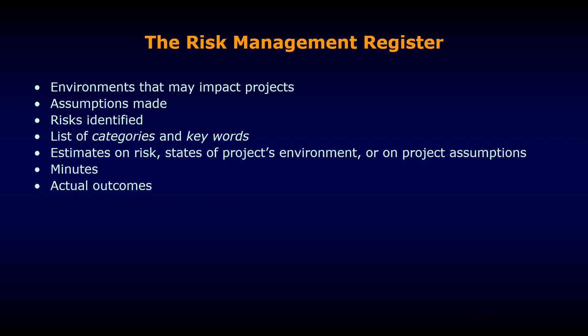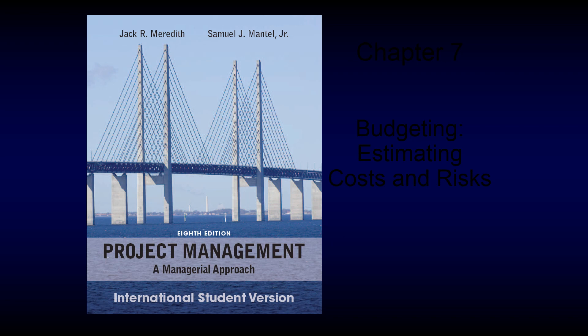Finally, the risk management register: the risk management staff is supposed to keep a risk management register, which is like a database recording all past risk management information. It includes environmental threats, assumptions made during project activities, identified risk factors, categories and keywords, estimations about risk states, minutes of meetings related to project risk, and actual outcomes of project activities. All of this is recorded so that information is readily available when needed. That concludes this part of the chapter. We will discuss Chapter 7 — Budgeting and Estimating Cost — next. Goodbye.